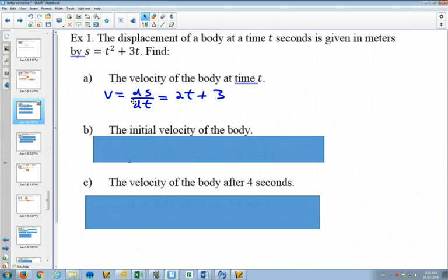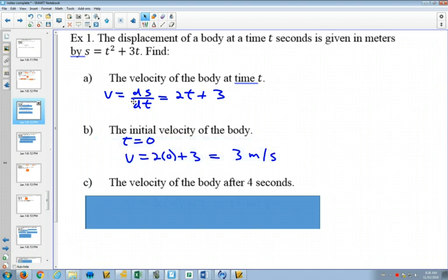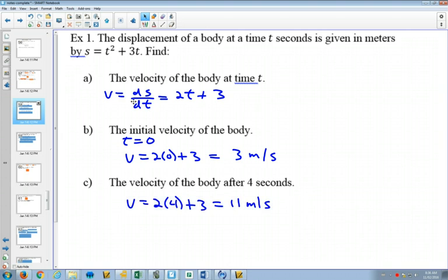What does it mean when it says initial velocity? When t is 0. So these questions, they give you key words in here. Initial velocity means that time is 0. And if time is 0 and we plug that in to our new equation for velocity, we find out that this starts by traveling at 3 meters per second. If we wanted to find it after 4 seconds, all we'd have to do is plug in 4 for t and find out it's traveling at 11 meters per second.